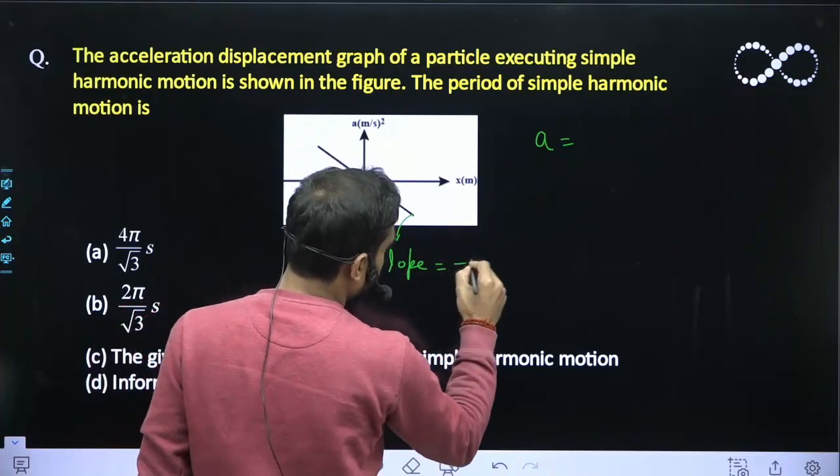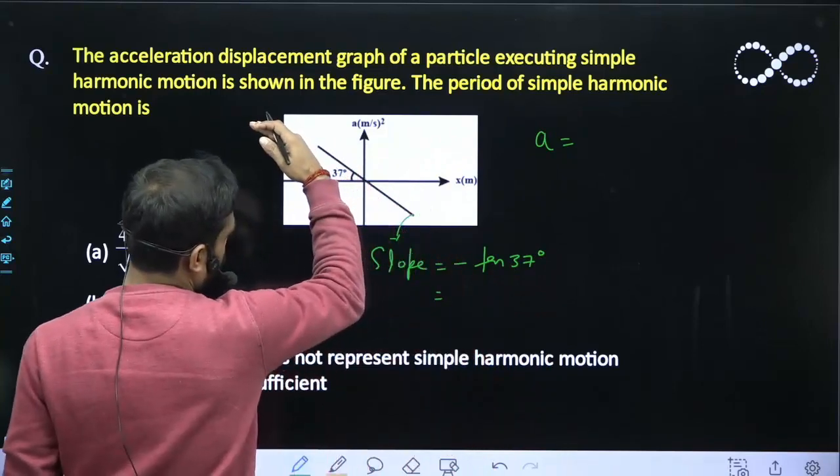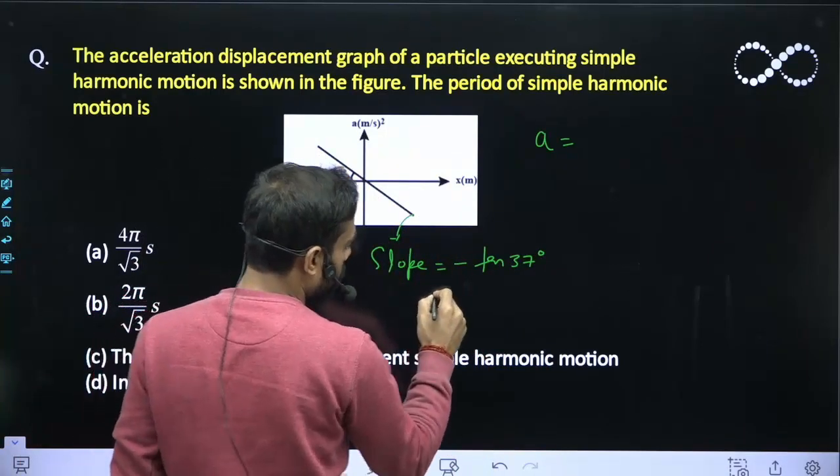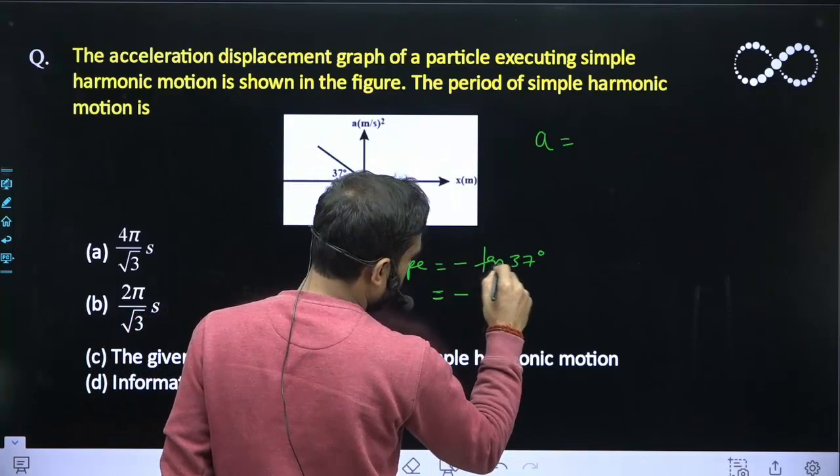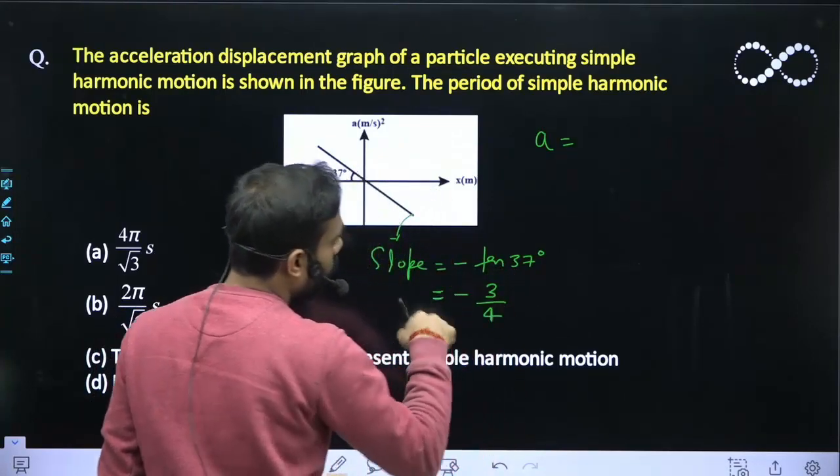The slope you can say minus tan 37 degrees. Because the line is going like this, the slope will be negative. So, this will become minus, and tan 37 is equal to 3 by 4. So, this is the value of slope.